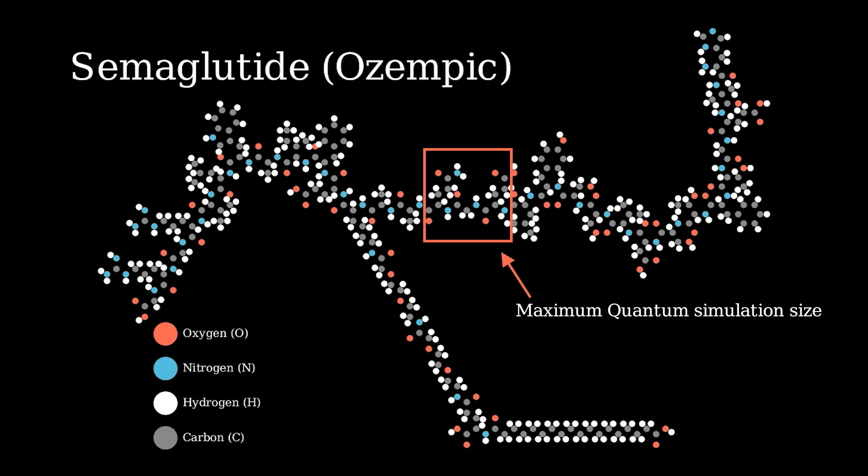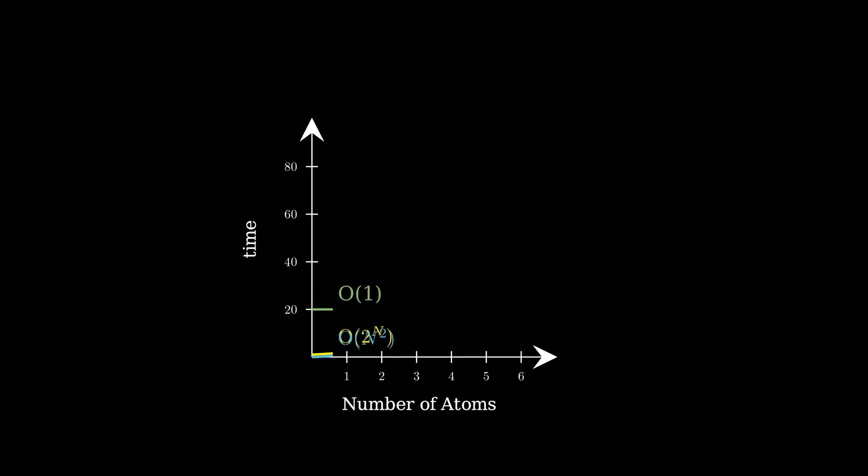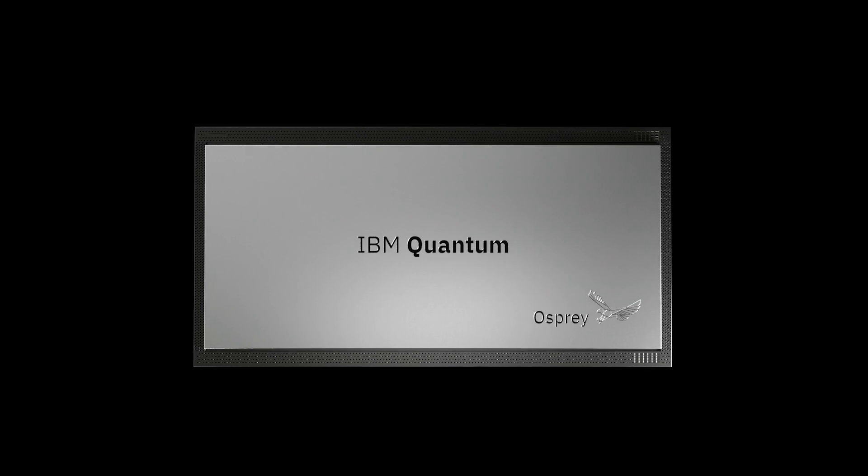Because quantum chemistry simulations are very computationally expensive, meaning that as you increase the size of the system that you want to simulate, the time that it takes to do that simulation increases exponentially. That said, sometimes it's beneficial to more directly calculate the physics of what's going on in a molecule. This is where quantum computing comes in.